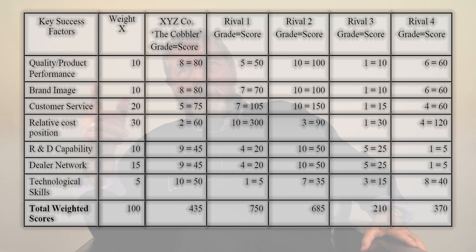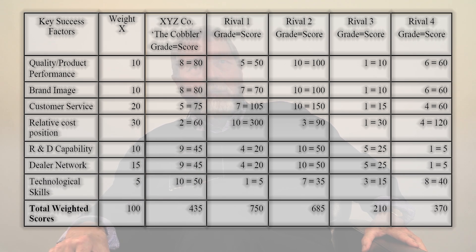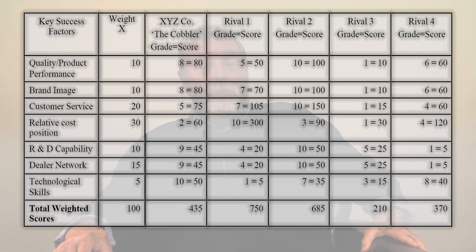Step 6: total the weighted scores. For each column, add the values obtained in step 5. We arrive at a total score for XYZ Company of 435 points; for Rival 1, 750 points; for Rival 2, 685 points; for Rival 3, 210 points; and for Rival 4, 370 points.